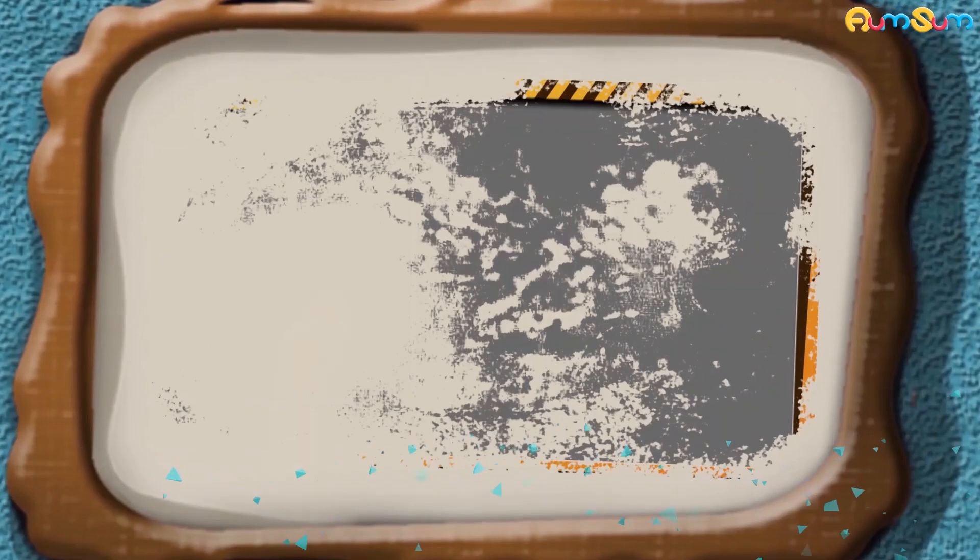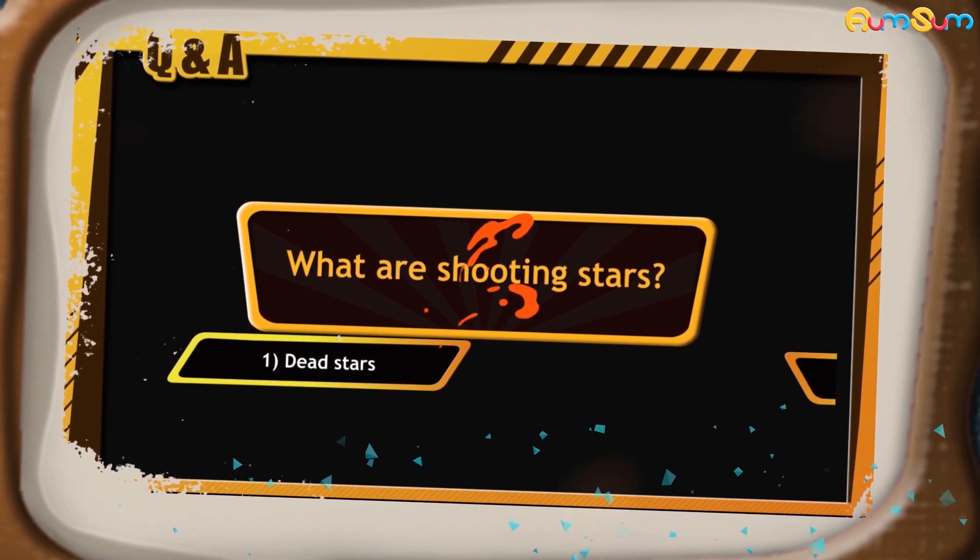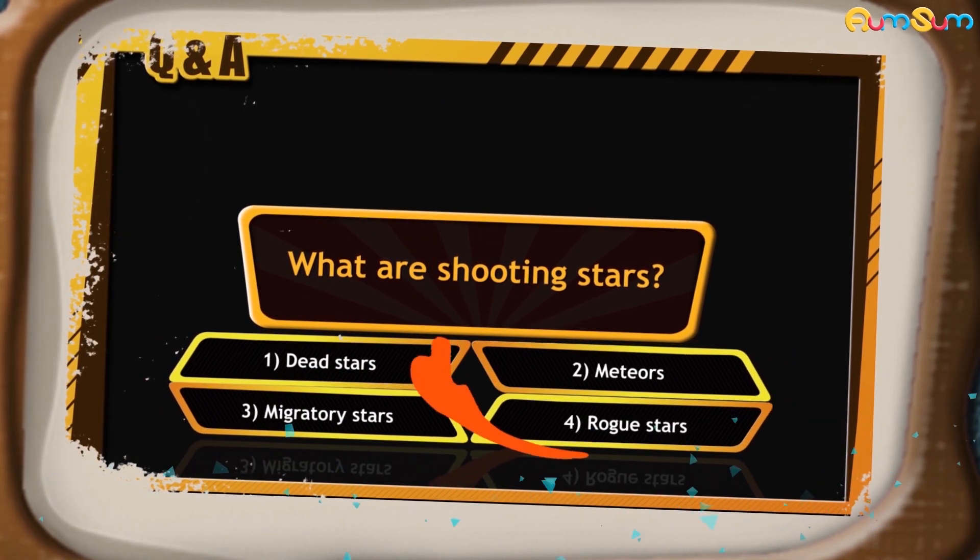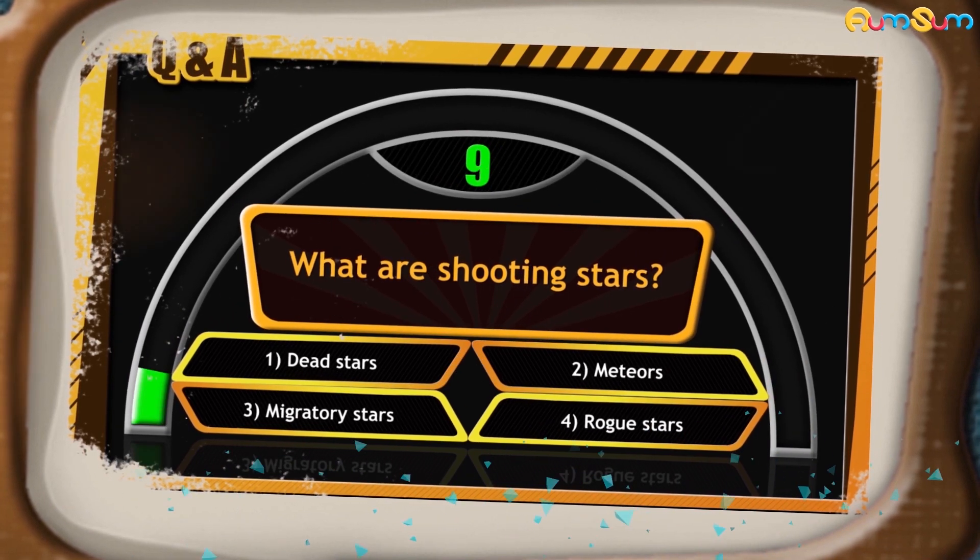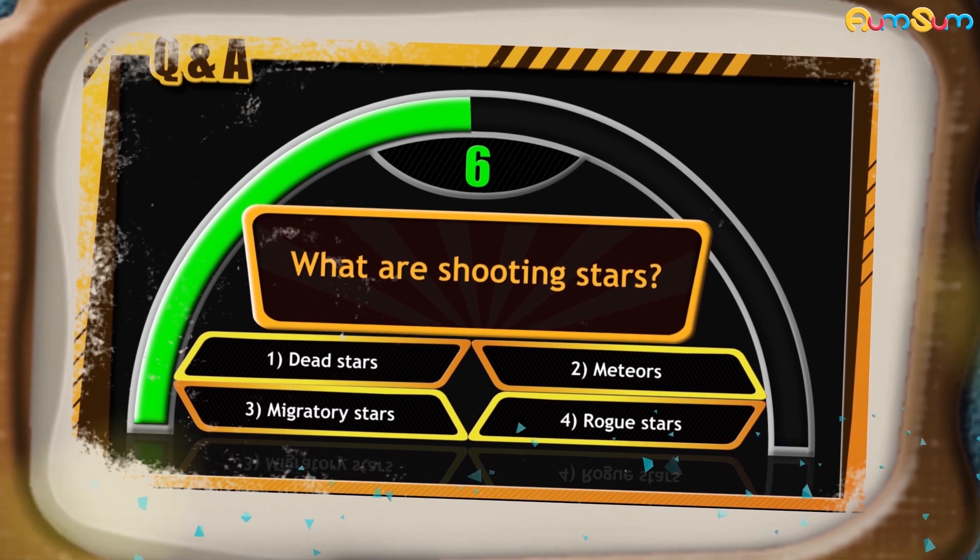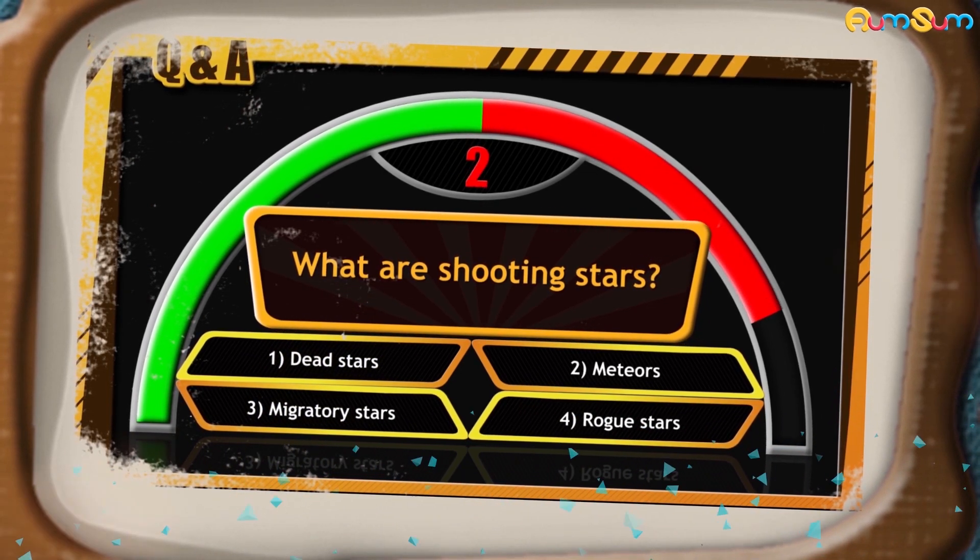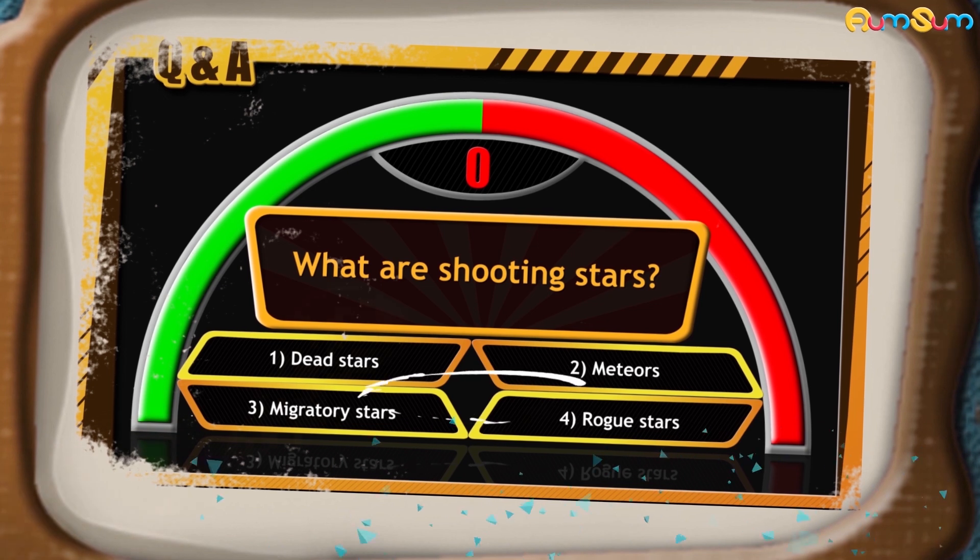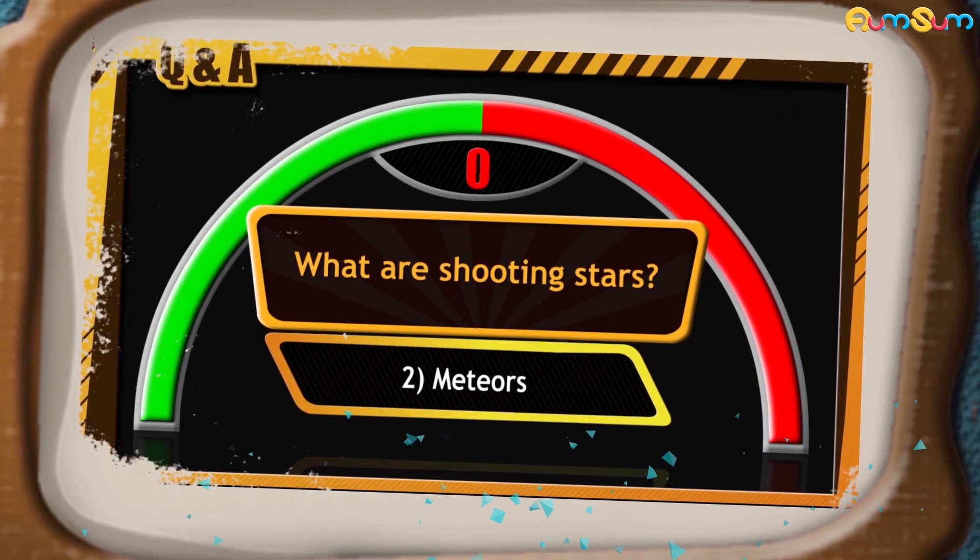Now, before going further, I'll ask you a question. What are shooting stars? Dead stars, meteors, migratory stars, or rogue stars? Come on guys, clock is ticking. Start typing your answers. The right answer is option number 2, that is meteors.